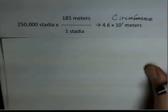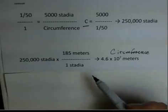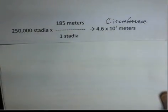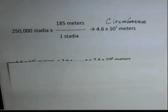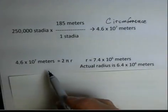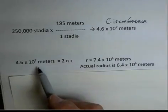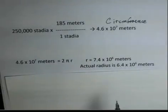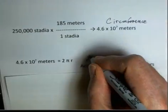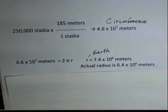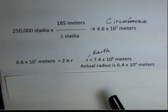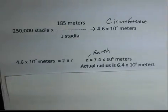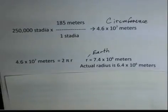Again, that's what we were setting up here in our equation. We solved this proportion for circumference. I just called it C. So the circumference in meters is 4.6 times 10 to the 7th meters. And if we use the circumference now as equal to 2πr, so 4.6 times 10 to the 7th meters equals 2πr. Divide both sides by 2. Divide both sides by π. And we get a value for the radius of the Earth of 7.4 times 10 to the 6th meters. The actual radius is closer to 6.4 times 10 to the 6th meters.